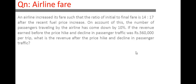Suppose in the initial state we had 100 passengers traveling with an initial fare of rupees 14. Now we have 90 passengers because there is a 10% decrease in the number of passengers due to the fare increase. The third part of the question asks: if the revenue earned before the price hike and decline in passenger traffic was rupees 5,60,000 per trip, what is the revenue after the price hike and declining passenger traffic?